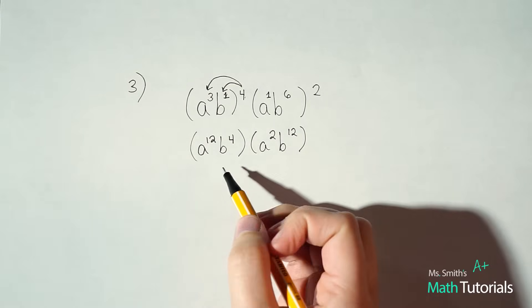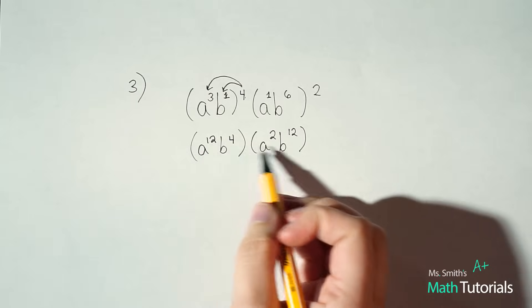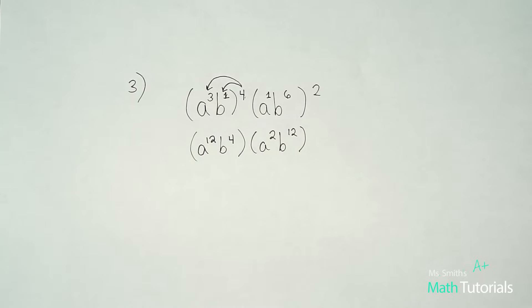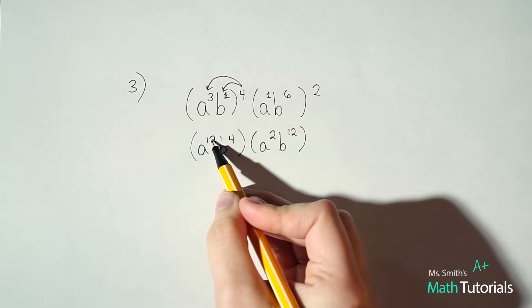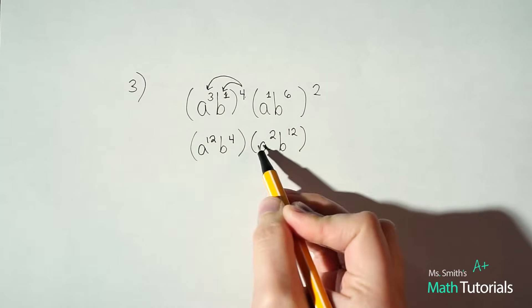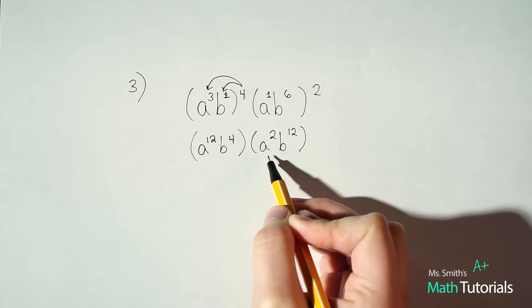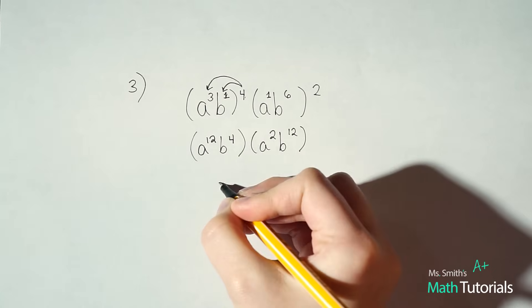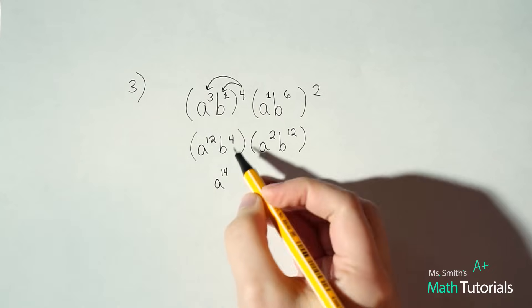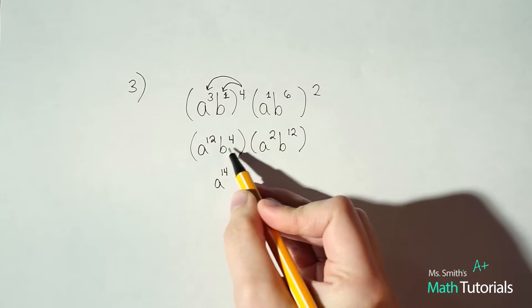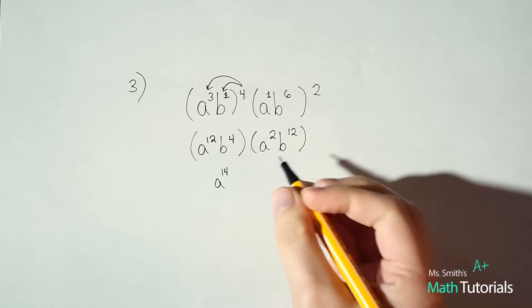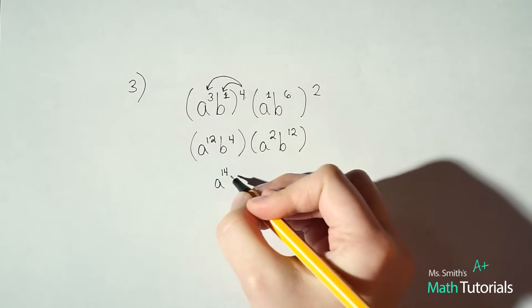Now let's simplify the second section. I've got a to the understood 1 — power brought to another power, we multiply — so a to the 2nd. b to the 6th brought to the power of 2: 6 times 2 is 12. These are being multiplied, so I need to apply my product rule and combine like terms. a to the 12th times a to the 2nd: 12 plus 2 is 14. And b to the 4th times b to the 12th: 4 plus 12 is 16.